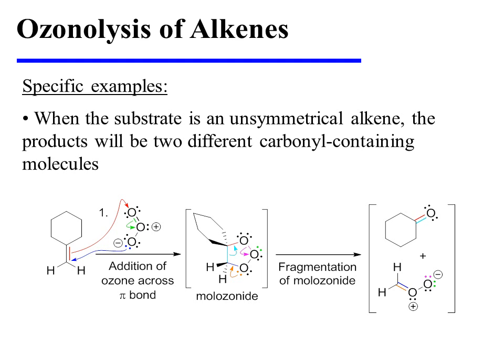A symmetrical alkene substrate will yield a single carbonyl-containing product upon ozonolysis. However, when the substrate is unsymmetrical, the products will be two different carbonyl-containing molecules. In this instance, the unsymmetrical alkene substrate undergoes the addition of ozone across the pi bond in the same fashion as seen previously, affording the transient molozonide intermediate, which rapidly fragments to give two pieces — one of which is doubly charged and therefore unstable — resulting in the recombination of these fragments.